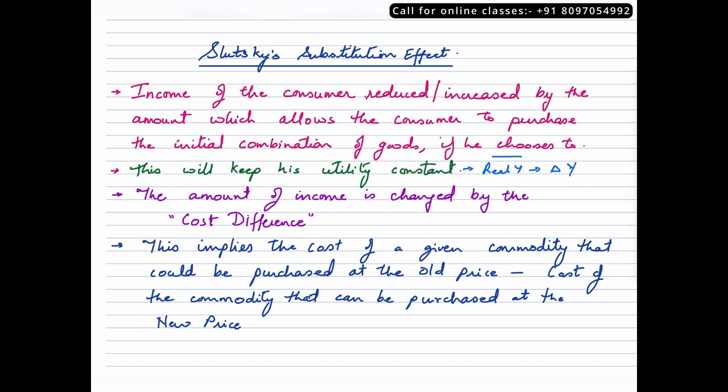The amount of income that is changed over here is basically referred to as the cost difference. Technically, the cost that a consumer is incurring to buy the commodity at old price minus the cost of the commodity that the consumer will be buying at the new price will give us the cost difference.